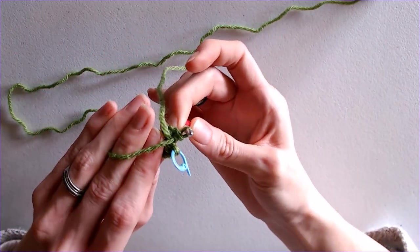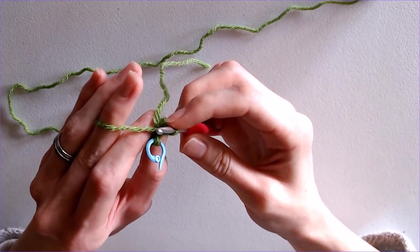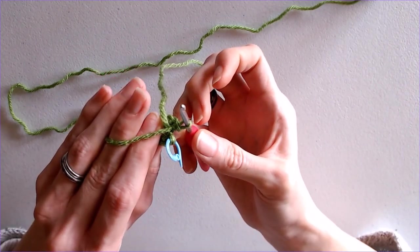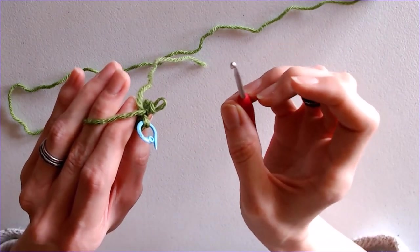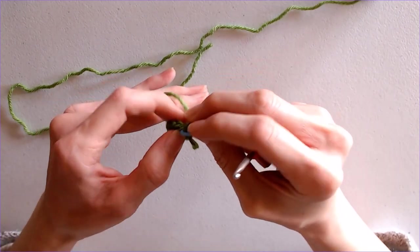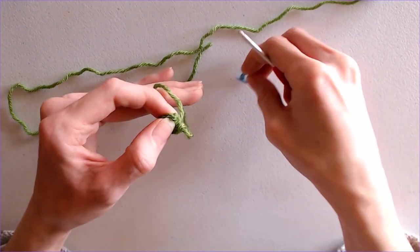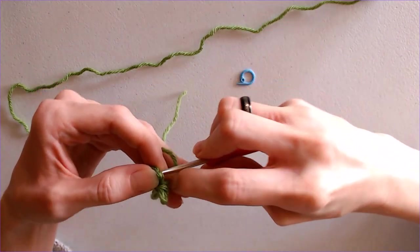The first loop here that's currently on your hook, we're going to go ahead and lengthen that a little bit, and we're going to remove your hook from your work. I have a stitch marker in the very first stitch here. I'm actually going to remove that and I'm going to place my hook backwards through the stitch.